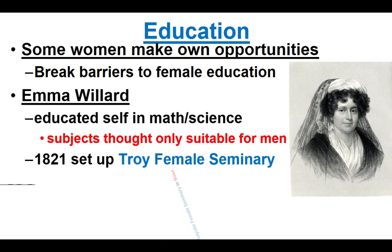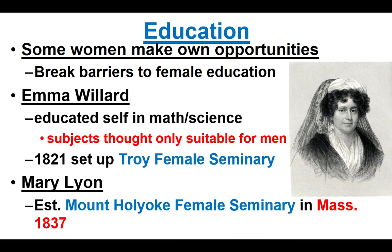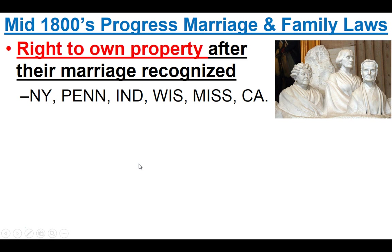Some women made their own opportunities in breaking down barriers to female education. Emma Willard educated herself in math and science — subjects only taught to men — and in 1821 set up a seminary school for women. Teaching religion was also considered a man's role only, and some religious denominations still do not allow women to preach to a congregation. Mary Lyon established Mount Holyoke Female Seminary, another institution that is still around today, with things happening piece by piece in areas where it was somewhat tolerated or accepted.